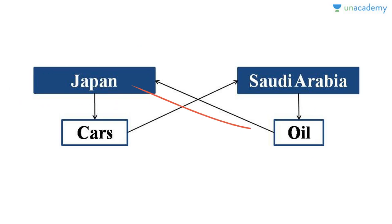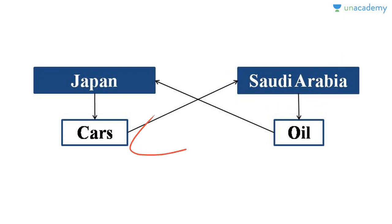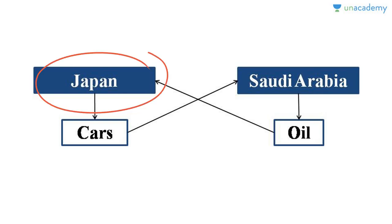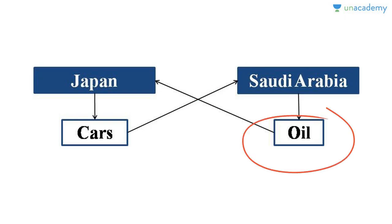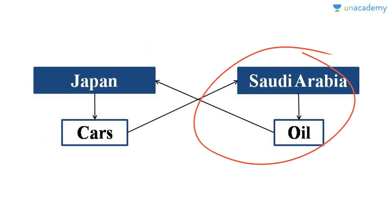If Japan wants to produce oil, it won't be able to do it in an efficient way. Similarly, Saudi Arabia won't be able to produce cars efficiently. But both need what the other has — Japan needs oil, Saudi Arabia needs cars. According to comparative advantage theory, Japan should import oil from Saudi Arabia and specialize in cars, and Saudi Arabia should import cars from Japan and specialize in oil. Both countries benefit and overall welfare increases.